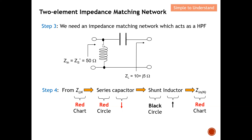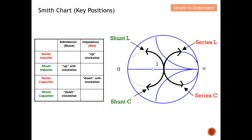Just before we go to the Smith chart, let's do a quick recall of what happens when we move for series C or shunt L. For shunt L, the movement is upward and anti-clockwise. For series C, the movement is downward and also anti-clockwise. In short, for a high pass filter it will always be anti-clockwise — up for the inductor and down for the capacitor.